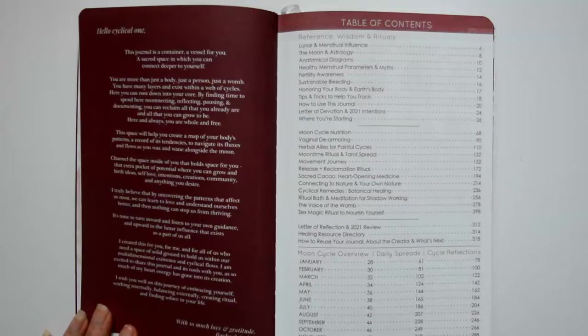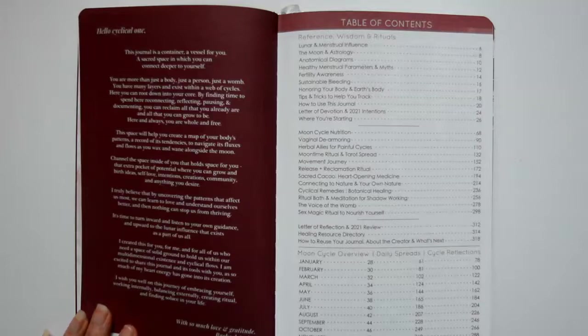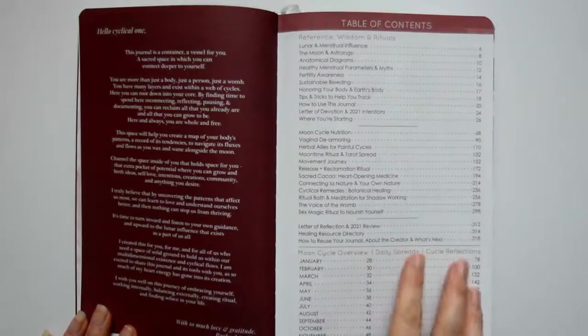Moon cycle nutrition, vaginal de-armoring, herbal allies for painful cycles, moon time ritual and tarot spread, movement journey, release and reclamation ritual, sacred cacao heart opening medicine, connecting to nature and your own nature, cyclical remedies, botanical healing, ritual bath and meditation for shadow working, the voice of the womb, sex magic rituals to nourish yourself, letter of reflection and 2021 review, healing resource library and how to reuse your journal and about the creator and what's next.